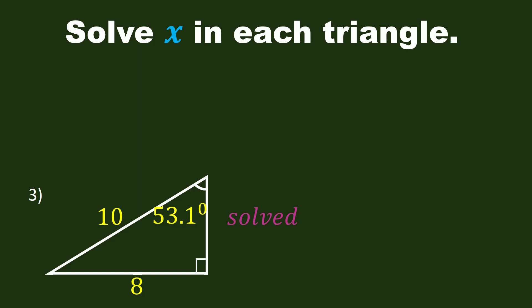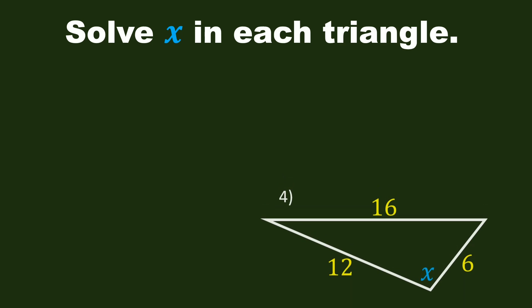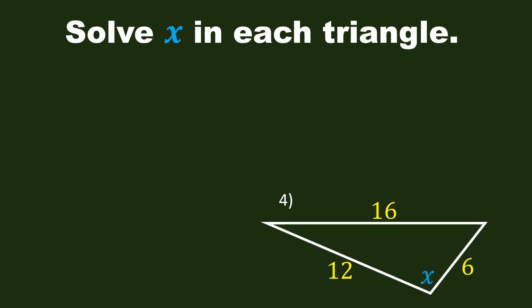Now, let us solve X in the fourth triangle. We see that the triangle is oblique, and the given parts are the three sides. So we can use law of cosines for this. We have 16 squared is equal to 6 squared plus 12 squared minus 2 times 6 times 12 cosine X.